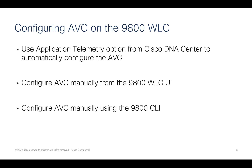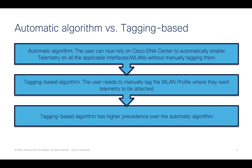From Cisco DNA Center there are two ways application telemetry is applied. One is the automatic algorithm, where all the provisioned SSIDs from Cisco DNA Center are enabled for AVC — this is the easiest way to apply AVC on the SSIDs on the 9800 controller. The tagging-based algorithm requires you to tag the wireless LAN profile name with a keyword, and only the tagged SSIDs will be enabled for AVC. The tagging-based algorithm has higher precedence over the automatic algorithm.